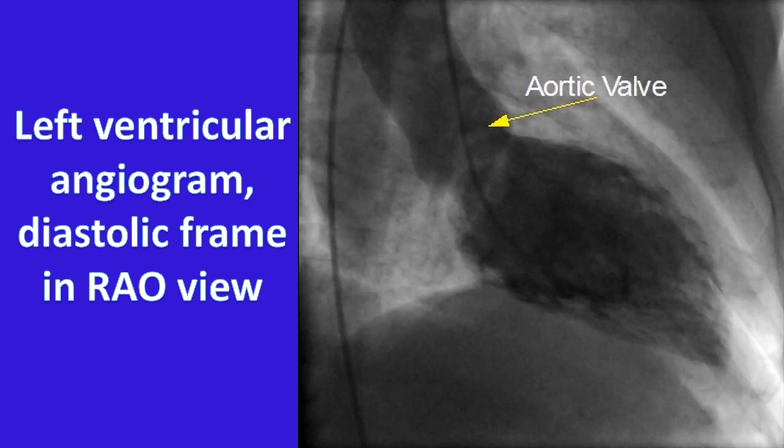The diastolic frame of the left ventricular angiogram shows trabecular pattern as negative shadows. The aortic valve in the closed position is seen as a thin negative shadow at the base of the sinus of Valsalva.